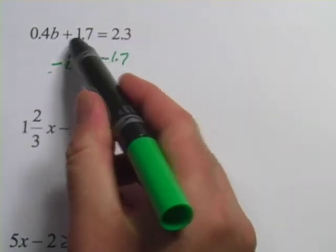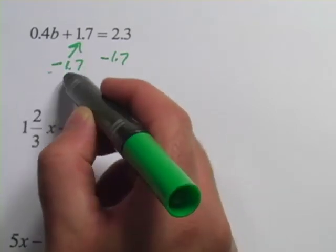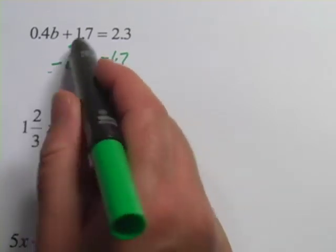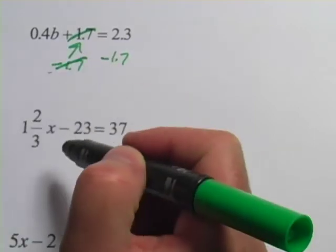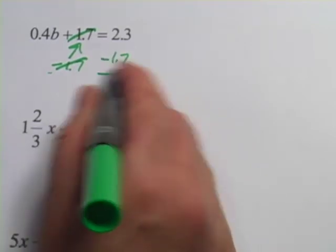Now on this side, when we take a positive 1.7, and we subtract 1.7, that comes out to be zero, which we don't even write, so it's like they cancel out. On the other side of the equation, we take 2.3 minus 1.7, and we should get 0.6 left.